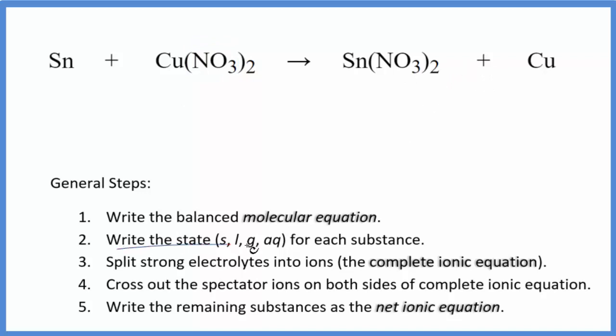Now we can write the state for each substance. Tin, this is just going to be tin metal. It'll just be a solid. For the copper 2 nitrate, if you know your solubility rules, nitrates are very soluble. So this will be aqueous. It'll be dissolved, split apart into its ions. For the tin 2 nitrate, that'll be aqueous as well. We have nitrates, copper by itself. That's a solid metal. So we have the states.